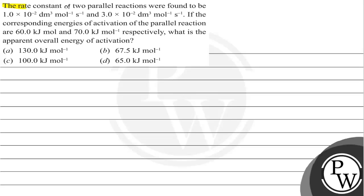Hello Bacho, let's read this question. The rate constant of two parallel reactions were found to be 1.0 x 10 raised to power minus 2 decimeter cube per mole per second and 3.0 x 10 raised to power minus 2 decimeter cube per mole per second. If the corresponding energies of activation of the parallel reactions are 60.0 kJ per mole and 70.0 kJ per mole respectively, what is the apparent overall energy of activation?